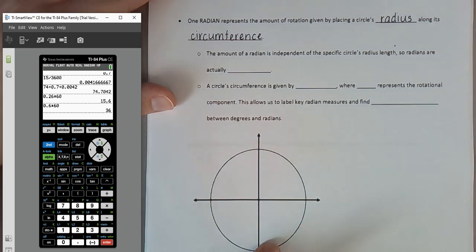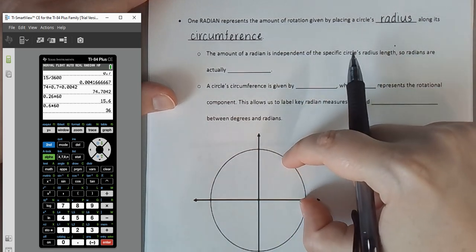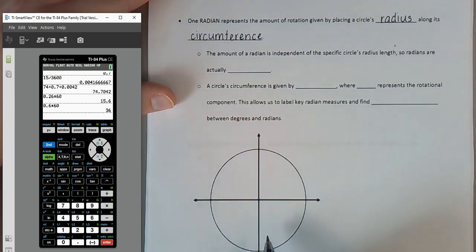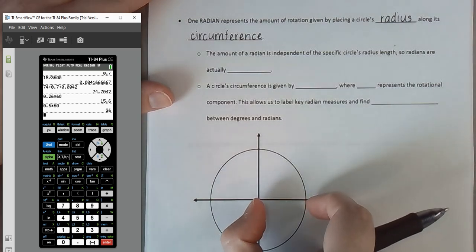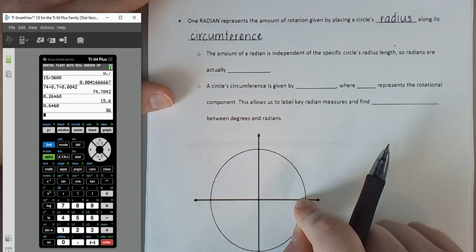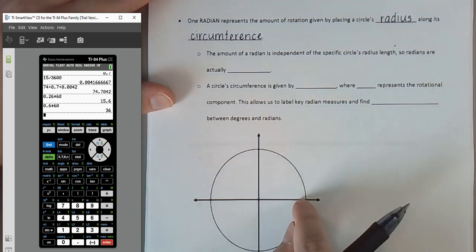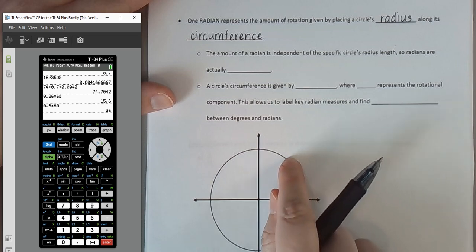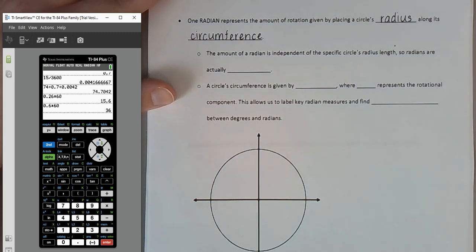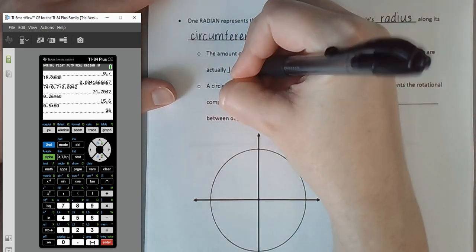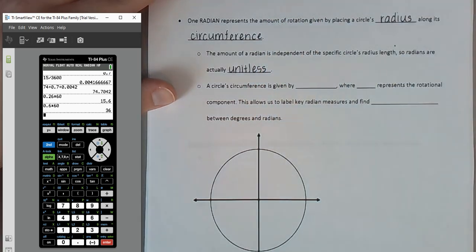Because the amount of rotation represented by a radian is independent of the circle's radius, radians are actually unitless. A radian means the same thing regardless of how we're measuring the dimensions of our circle — whether measured in inches, miles, or light years. So a radian is unitless because it represents the same rotation no matter how large or small the circle.